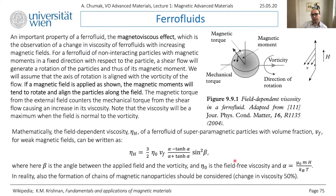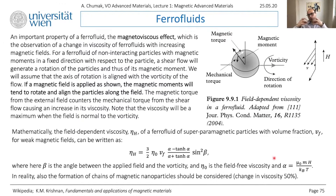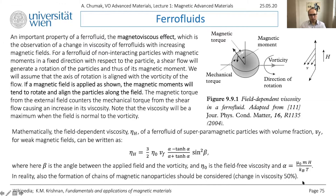The application of magnetic field should change viscosity by only three percent according to this model, but in experiment the real change is around 50 percent - much more pronounced than this simple model gives. People now understand what is going on: the nanoparticles form chains, one coupled to another. Instead of independent rolling particles you have a chain, and changing its direction influences the vorticity much more strongly. More complex theories are needed to explain this viscosity change.